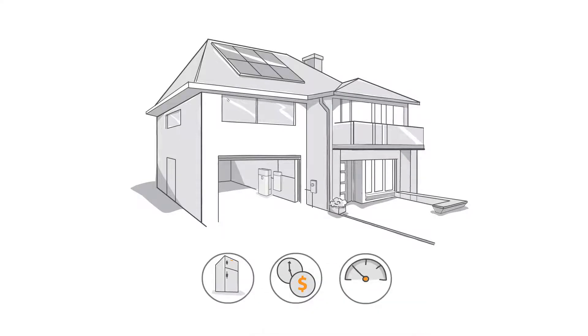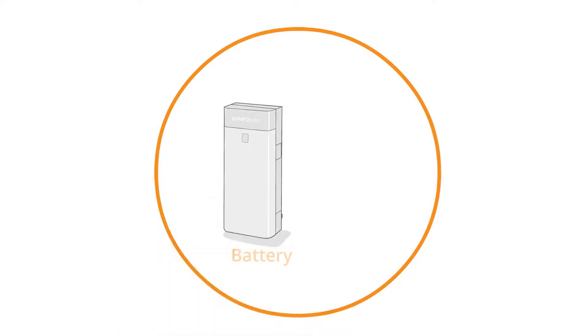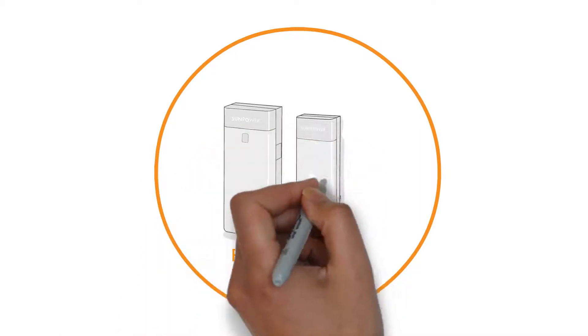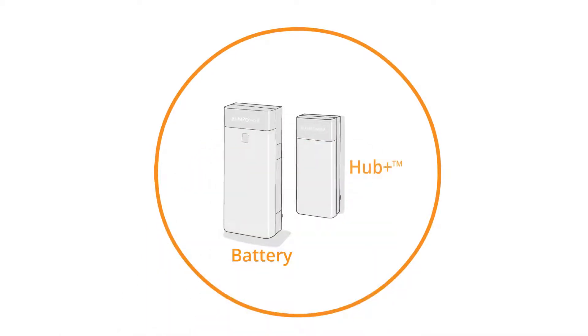SunVault storage is made up of two elegant and compact boxes, the SunVault battery and the Hub Plus. The SunVault battery stores energy produced by your solar panels, while the Hub Plus controls when and how that energy is used.